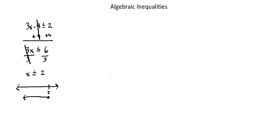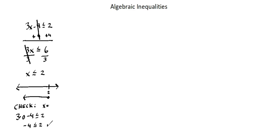Now when we check an inequality we have multiple values we can use for our check. So let's use an x value of 0, which is less than or equal to 2. If we put 0 in for x: 3 times 0 minus 4 is less than or equal to 2. 3 times 0 is 0, minus 4 is less than or equal to 2. And yes, that is a true statement. So in our check we used an x value of 0 and confirmed a true statement.